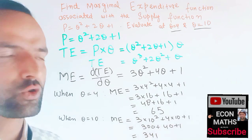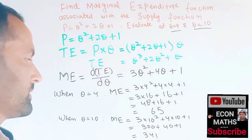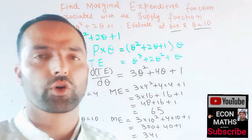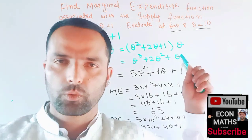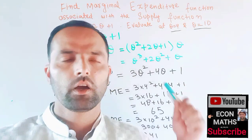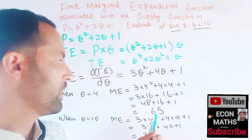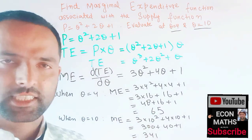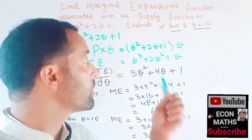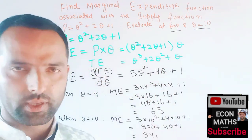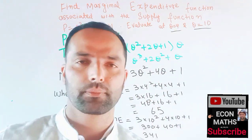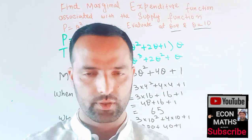So our marginal expenditure is 341 when our output level is 10, and marginal expenditure is 65 when our output level is 4. I hope I made myself clear in this video. Thank you.